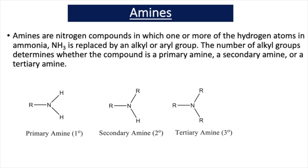In our previous videos on the topic of amines, we learned that amines are nitrogen compounds in which one or more of the hydrogen atoms in ammonia, NH3, is replaced by an alkyl or aryl group. The number of alkyl groups determines whether the compound is a primary, secondary, or tertiary amine.